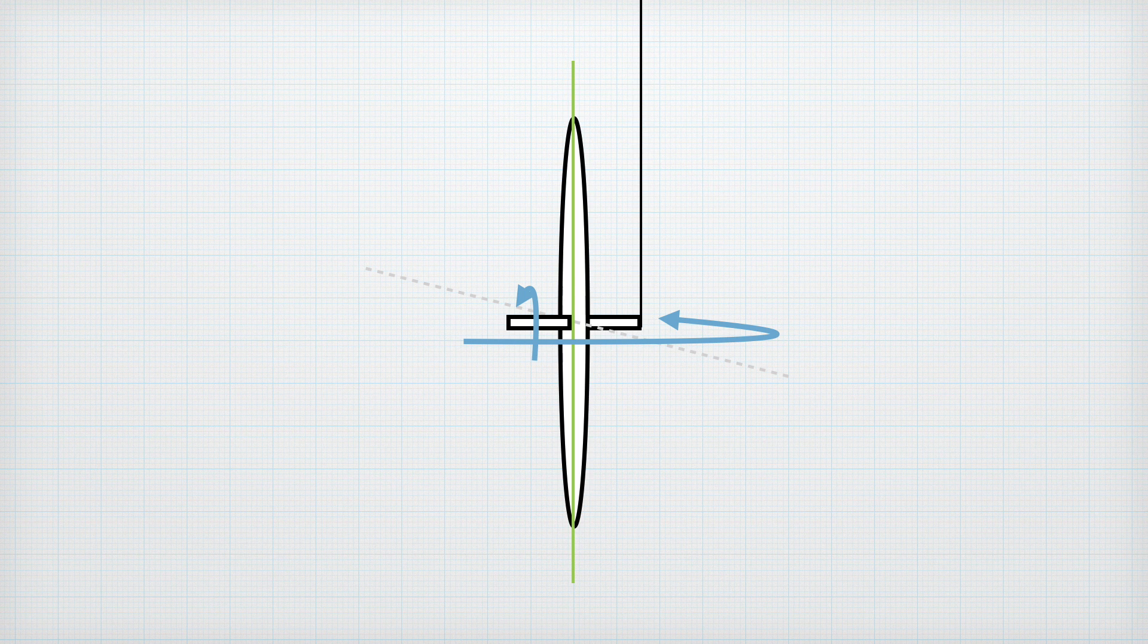Also, when we change the direction of the spin, the 90 degree flipping of all those forces being applied on the axis is flipping as well.